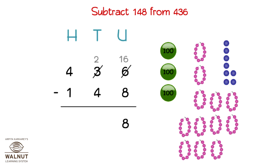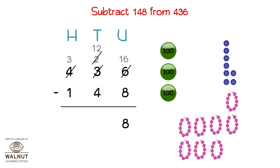Now we have to subtract the tens. 2 minus 4 is not possible, so we borrow from the hundreds. Let's do it in the numbers too. Then we subtract the hundreds and get the final answer. So 436 minus 148 is equal to 288.